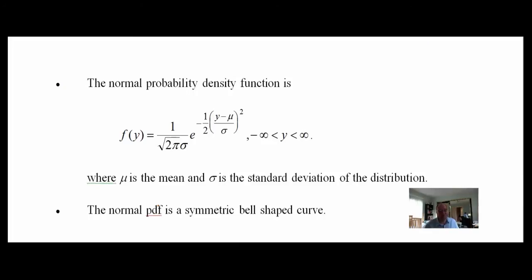Here's our first equation: the normal probability density function. It goes from negative infinity to positive infinity. We've got some e's, pi, and our key parameters — mu and sigma. Pi is used when expressing circles, which produces the curve shape, and e helps in that regard too. If you're in a theoretical math-based statistics class you'd need to derive this, but we won't do that here.